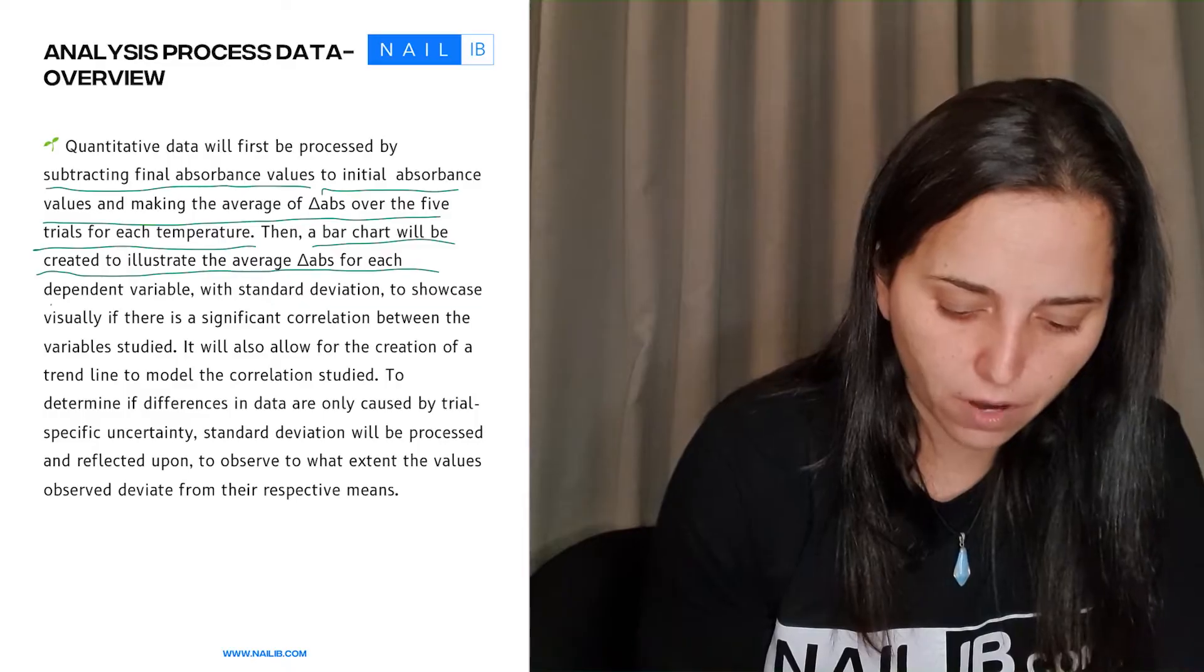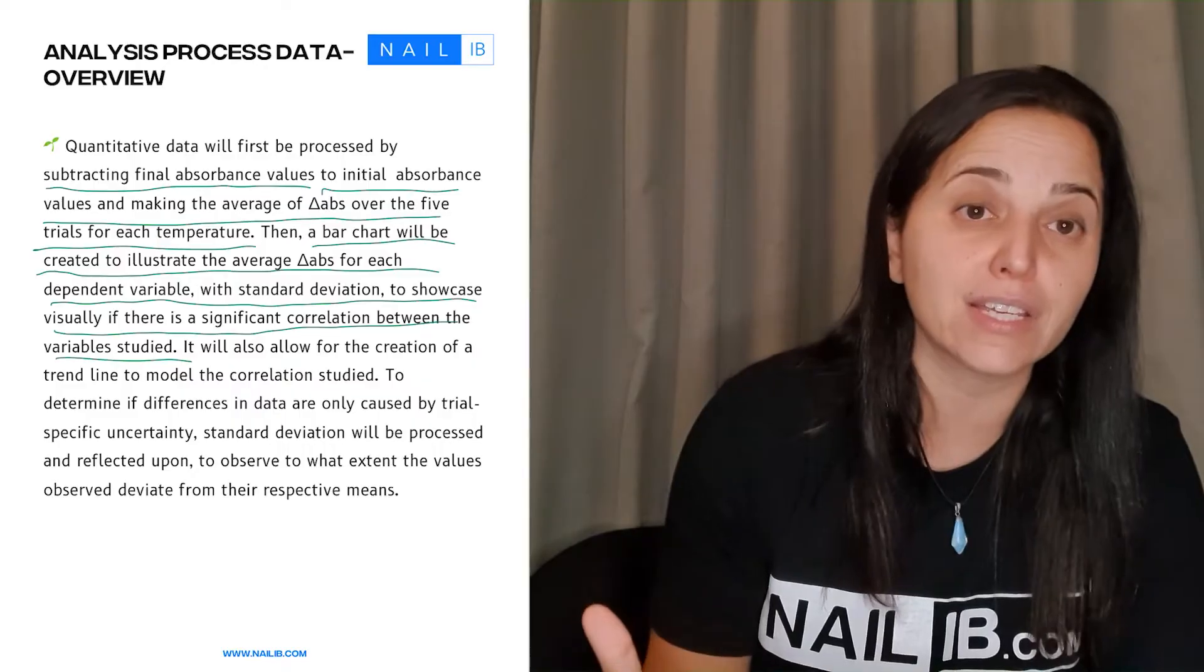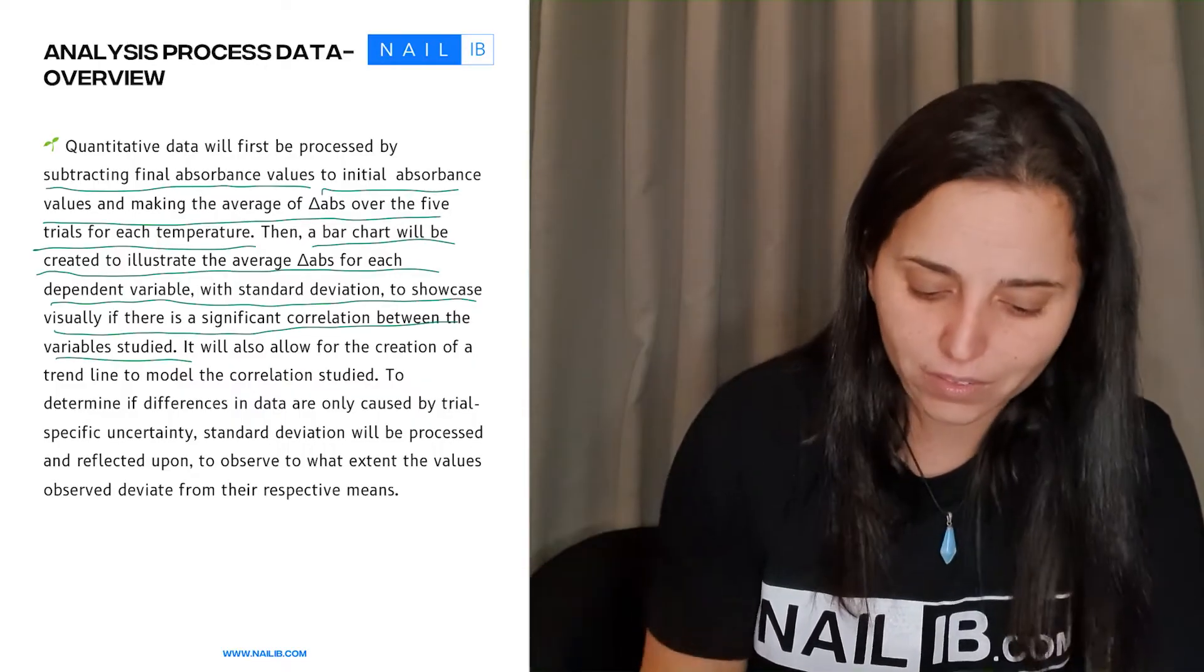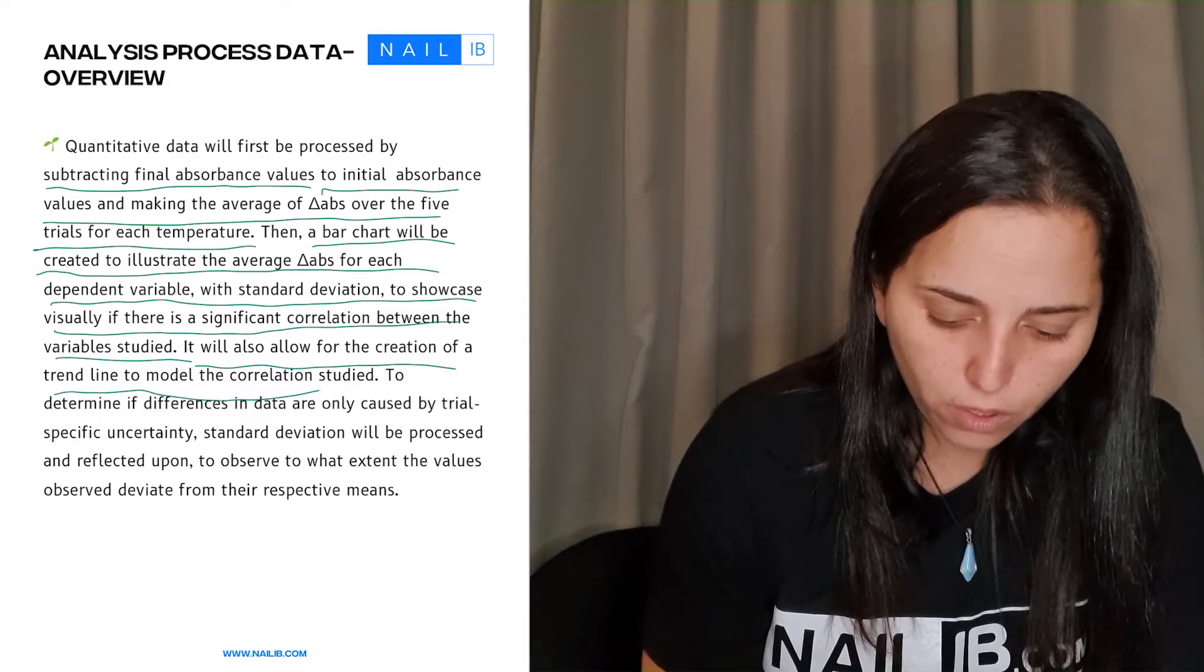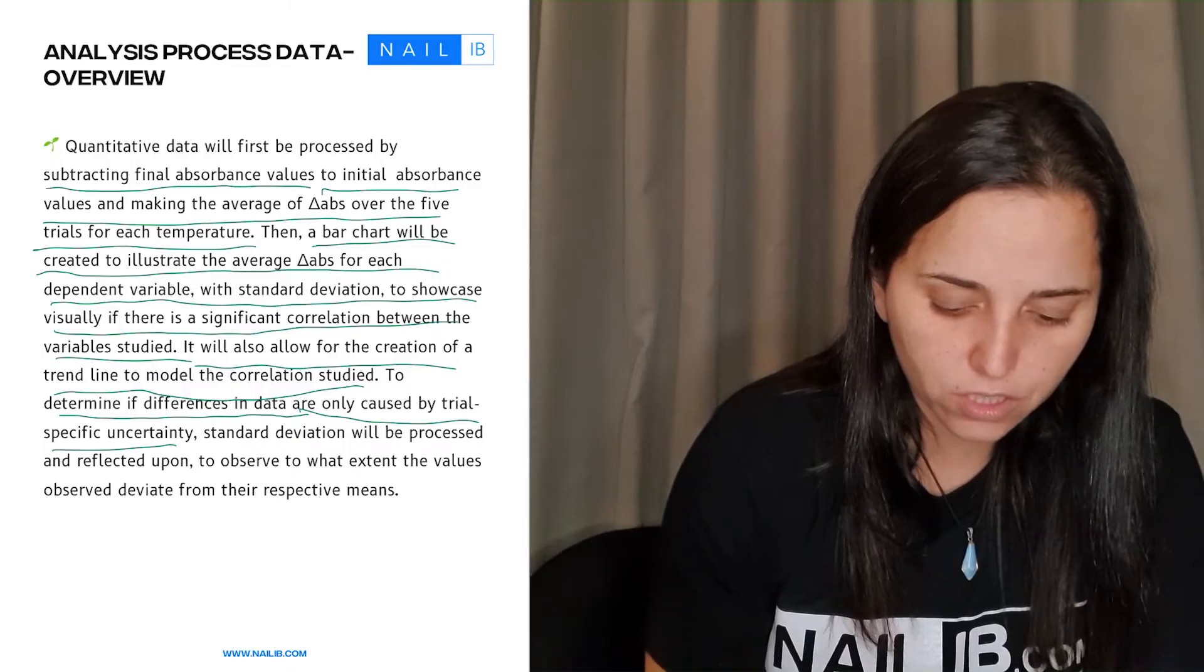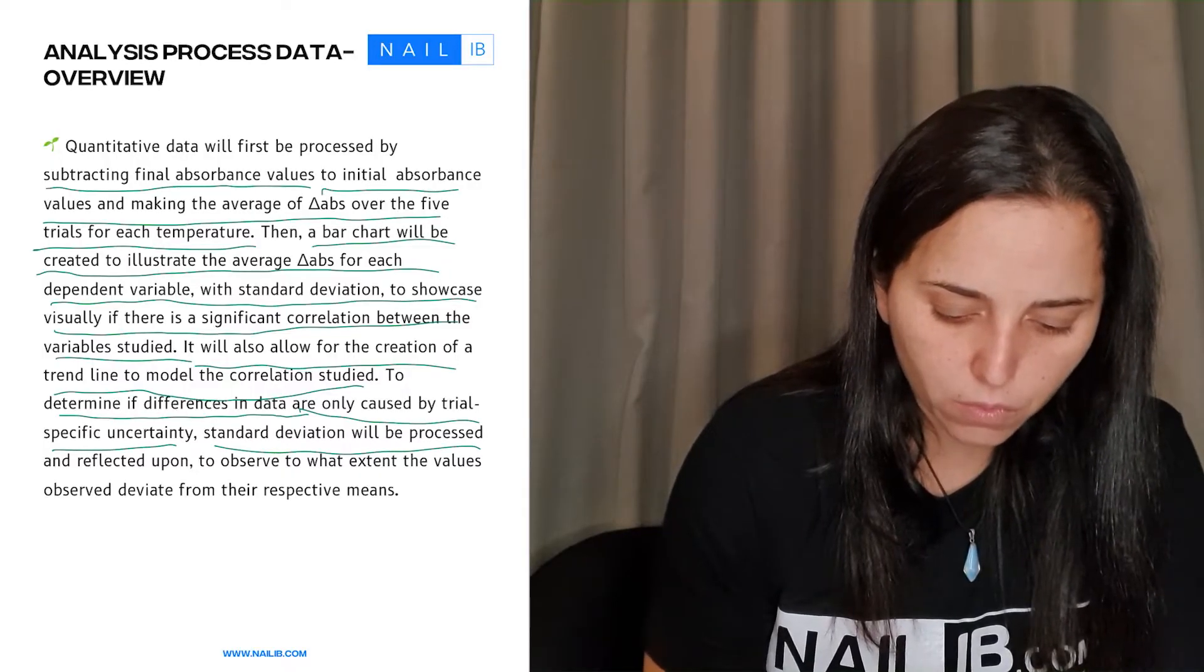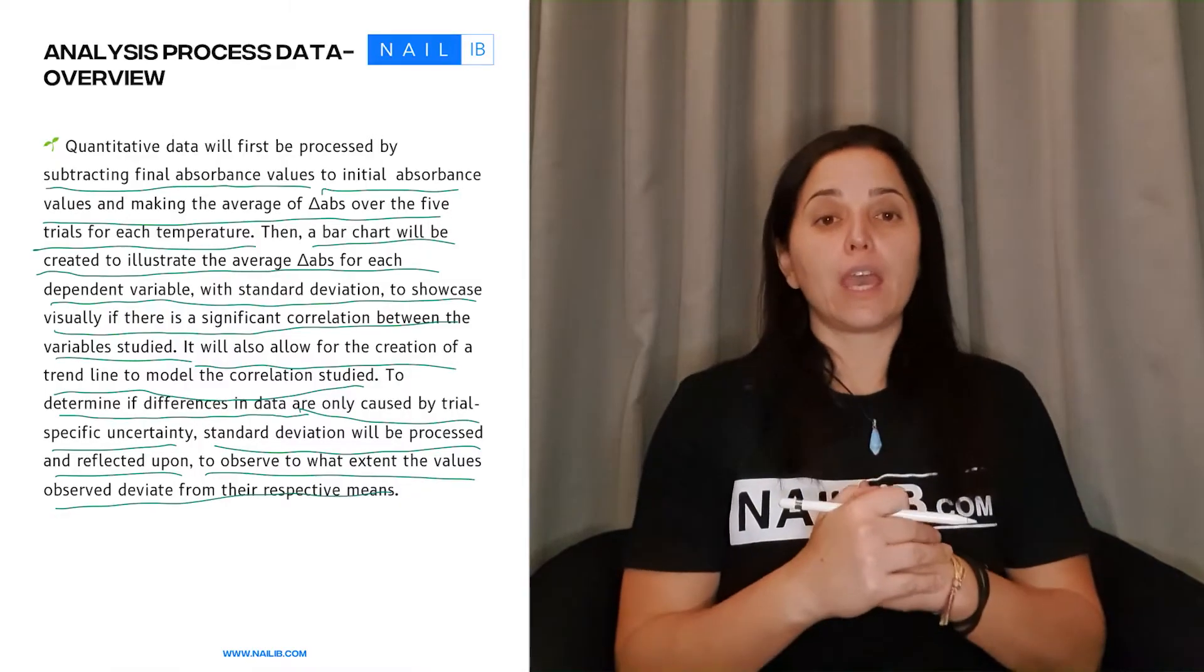Then a bar chart will be created to illustrate the average of each of these dependent variables of the standard deviation to showcase that visually there's a significant correlation between the variables studied. He's just saying again what he's doing. It will allow for the creation of a trend line to model the correlation studied, to determine if differences in data are only caused by trial-specific uncertainty.